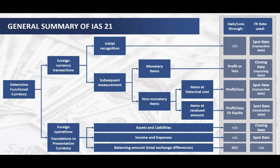IAS 21 covers functional currency — the key set in functional currency — item definitions, foreign currency transactions, and how translation flows. Beyond individual transactions, if there is a foreign operation, a branch, or a liaison office, then foreign operation translation applies using the presentation currency. These are the two main content areas of IAS 21: foreign currency transactions and foreign operation translation.